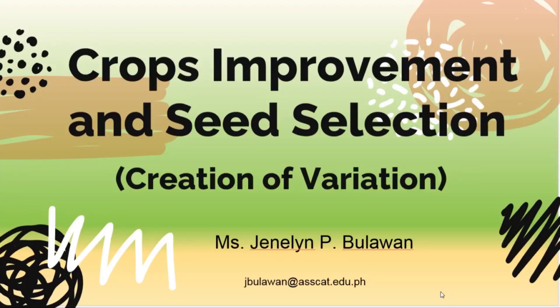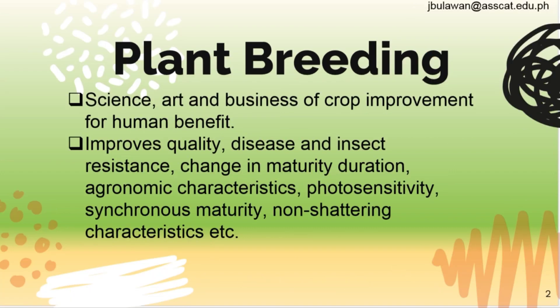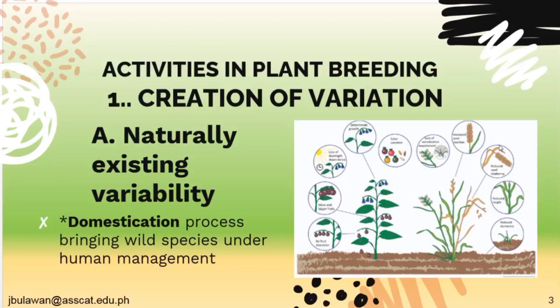We are now in Crops Improvement and Seed Selection, and the topic is the Creation of Variation. So what is plant breeding? It is a science, art, and business of crop improvement for human benefit. It improves quality, disease and insect resistance, change in maturity duration, agronomic characteristics, photosensitivity, synchronous maturity, non-shattering characteristics, and others.